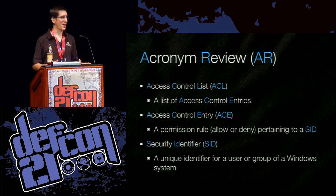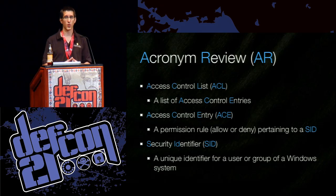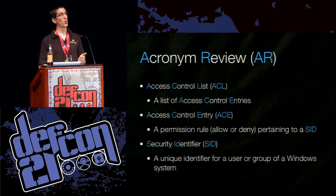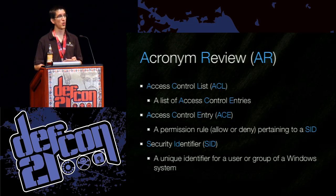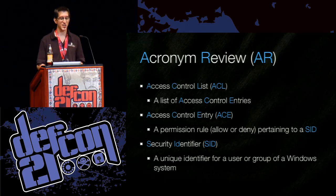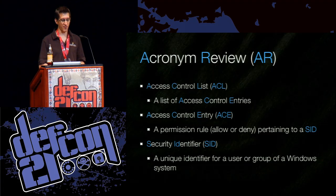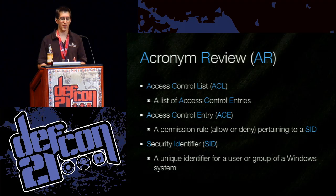Let's do some acronym review. There's an access control list, or ACL — a list of access control entries. There's an access control entry, or ACE — a permission rule which says allow or deny these permissions for this SID. And finally, there's the security identifier, the SID — a unique identifier for a user or group on a Windows system.